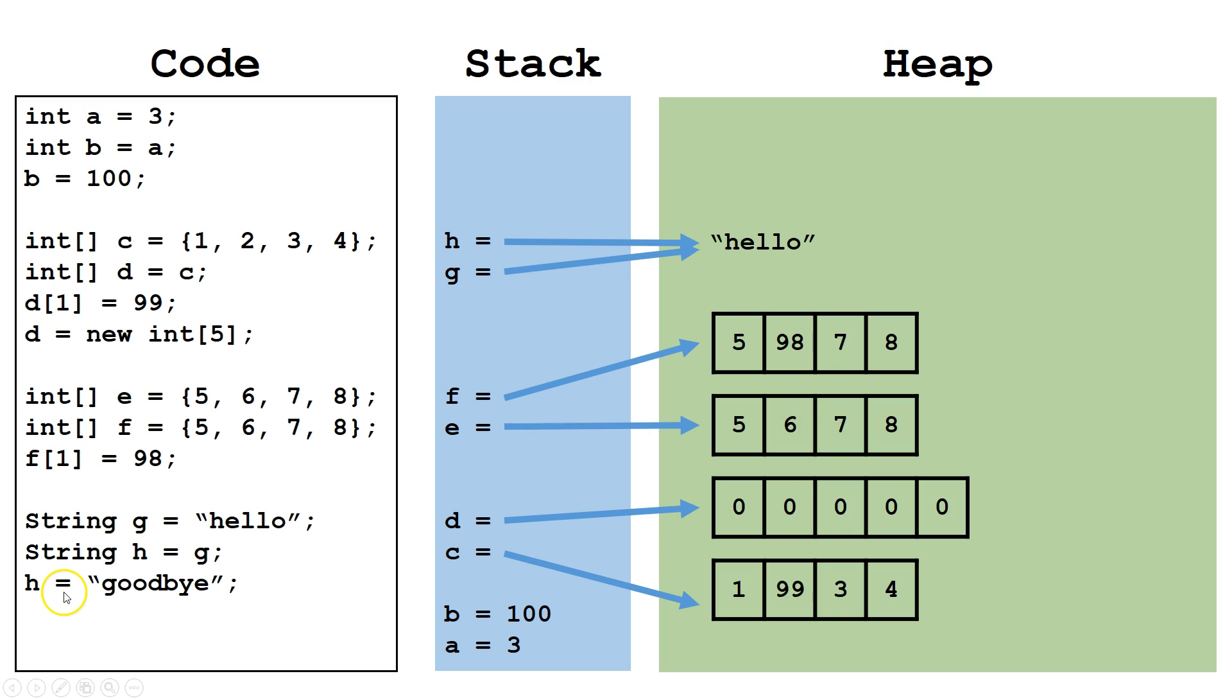We have H point at a new object, goodbye, which is going to be a completely different object on the heap. So now G and H are no longer pointing at the same objects, and the objects have different values.